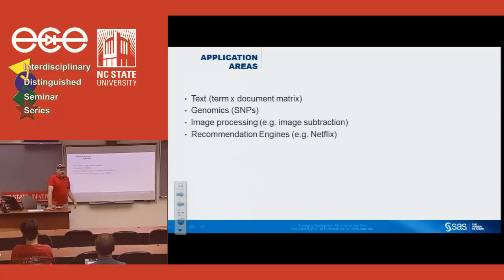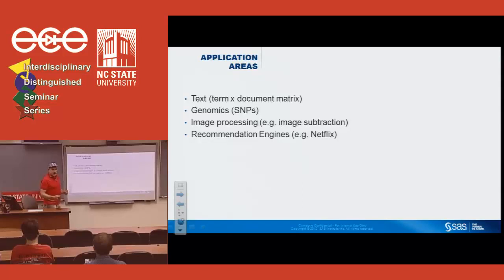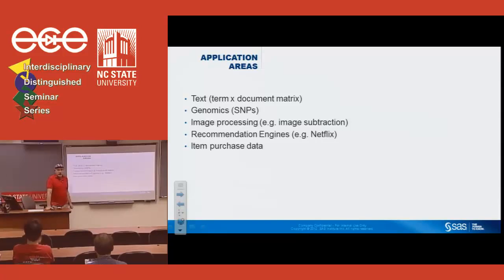Recommendation engines like Netflix are another example: there are thousands of movies but most people haven't rated an appreciable fraction of them. This applies to other recommendation engines too, such as what ads to present in a web environment. You have to figure out this missing data problem. Item purchase data — like an Amazon catalog — is also sparse: you want to know patterns of buying behavior, what people buy together. This has been technically referred to as market basket data.